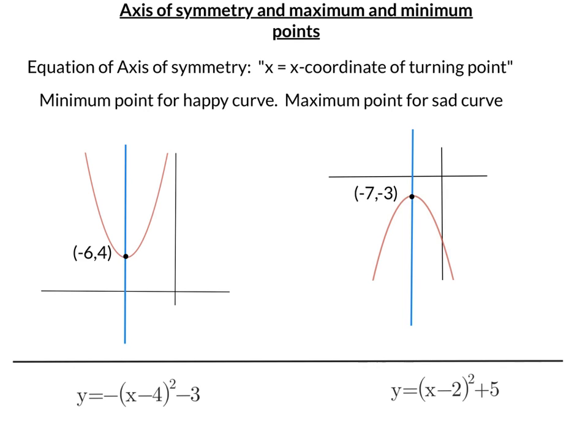So for the first one, it's going to be x equals negative 6. And for the second one, it's going to be x equals negative 7.